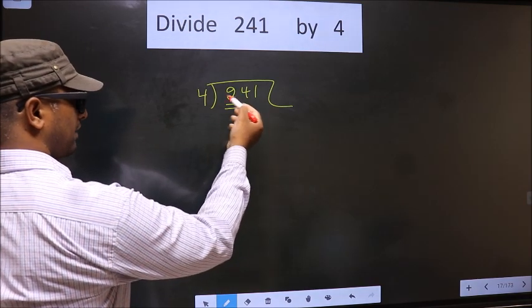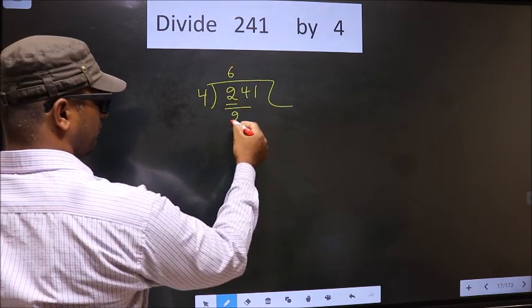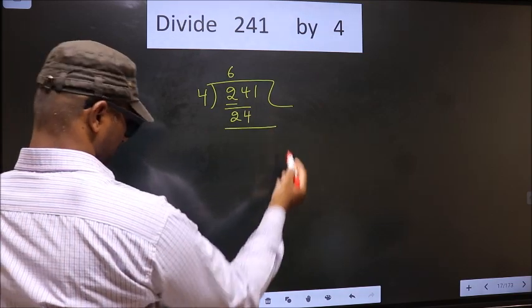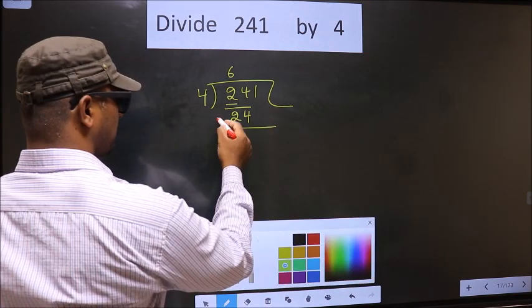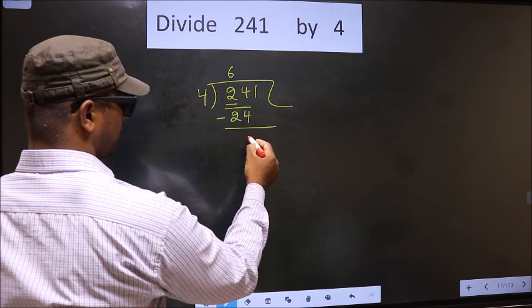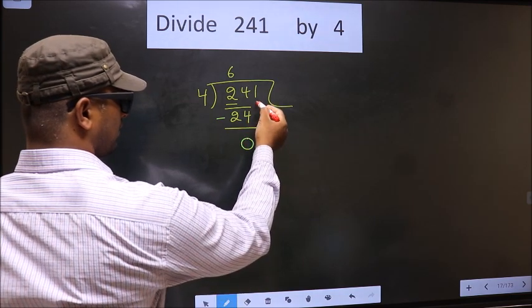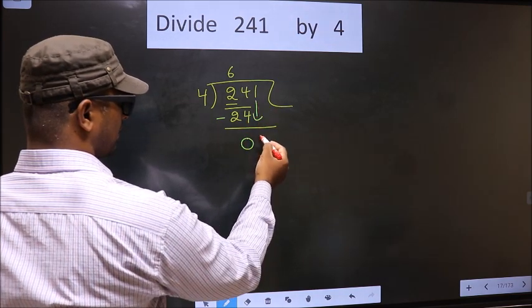When do we get 24 in 4 table? 4, 6, 24. Now, you subtract. 24 minus 24 is 0. Now, you bring down the beside number 1.